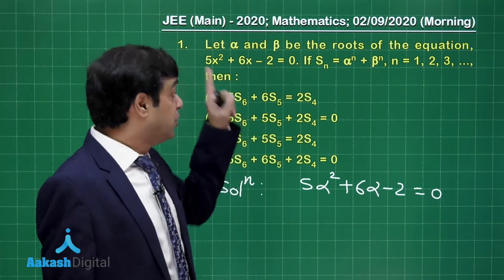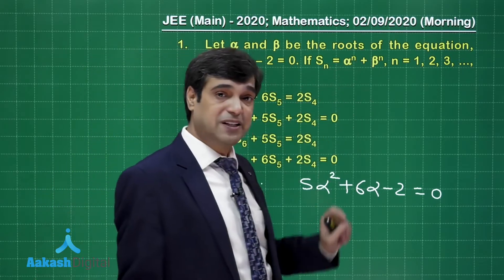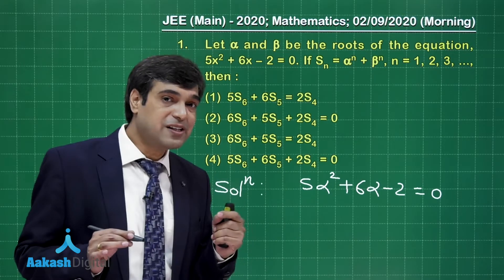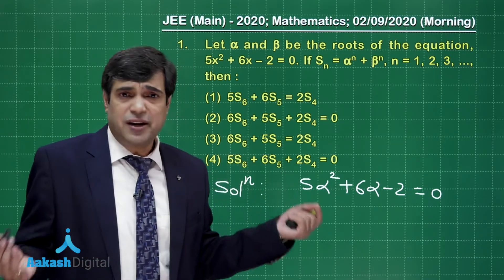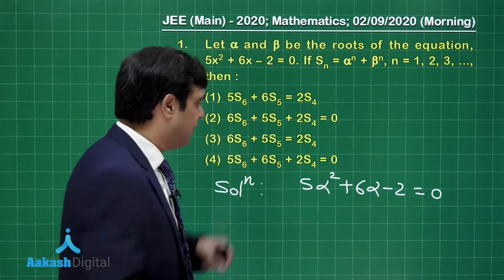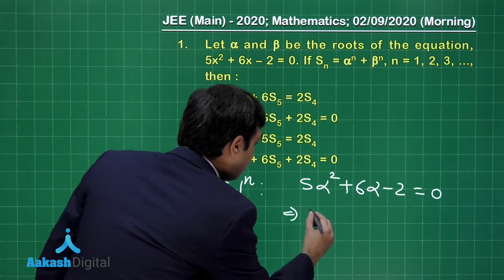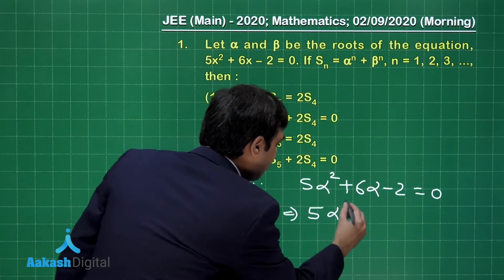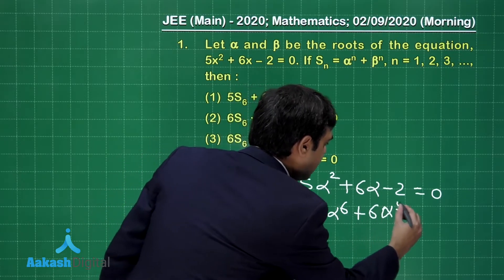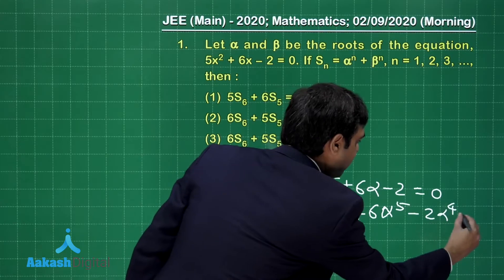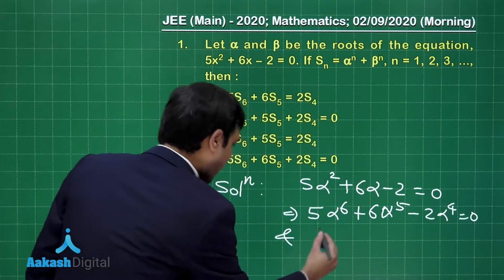You have to talk in terms of 6, 5, and 4. You know that Sₙ is αⁿ + βⁿ, so what you need is the powers for alpha and beta. 6 as maximum. You can conclude the general one with n, or directly you can say 5α⁶ + 6α⁵ - 2α⁴ = 0.